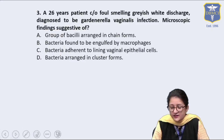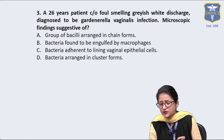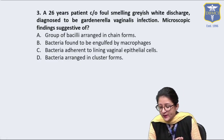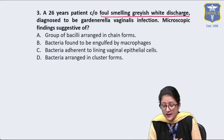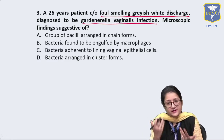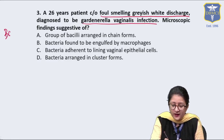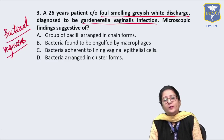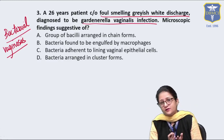Question 3 is a simple bacterial vaginosis question, often asked in various forms. A 26-year-old patient presents with foul-smelling grey-white discharge and is diagnosed with Gardnerella vaginalis infection — that means bacterial vaginosis. In bacterial vaginosis, the lactobacilli are replaced by gram-negative rods, most prominently Gardnerella vaginalis, along with others like Ureaplasma and Mobiluncus.